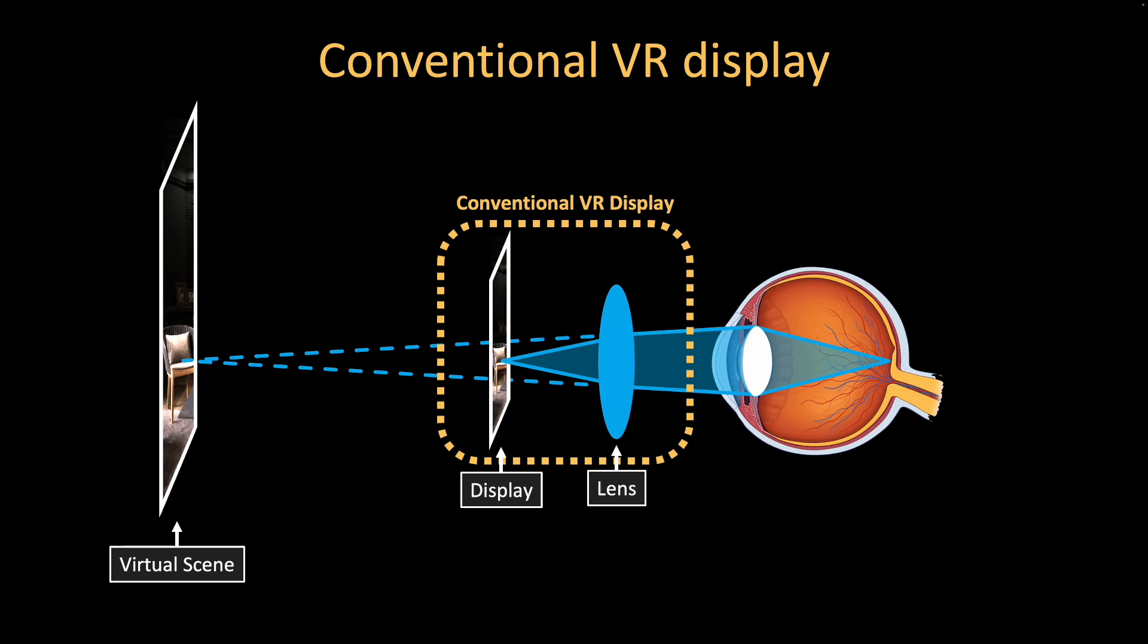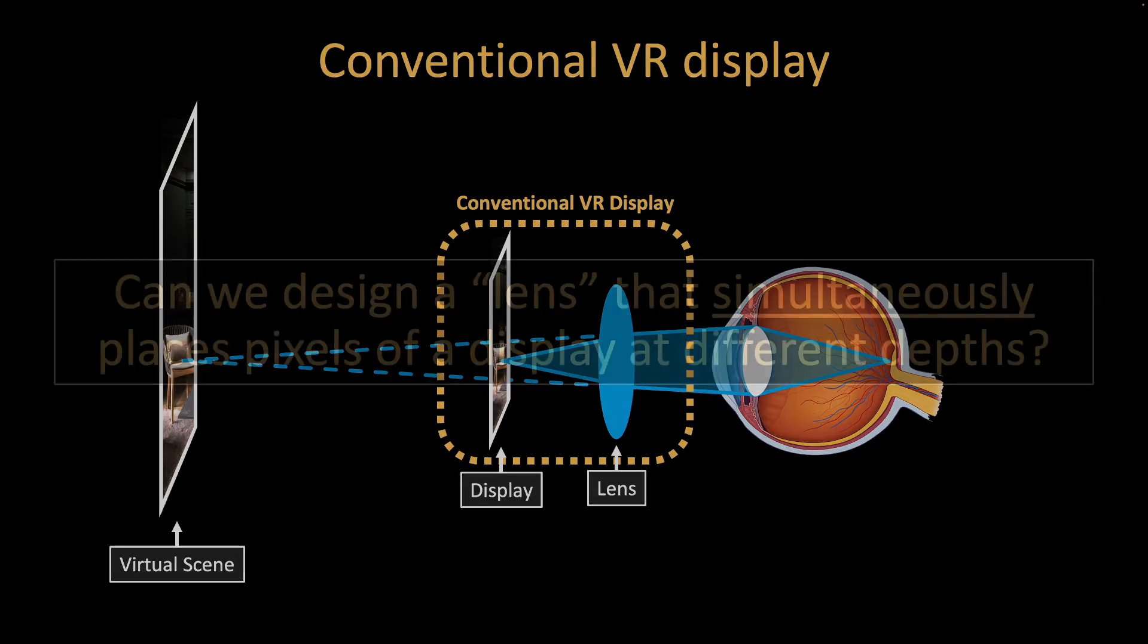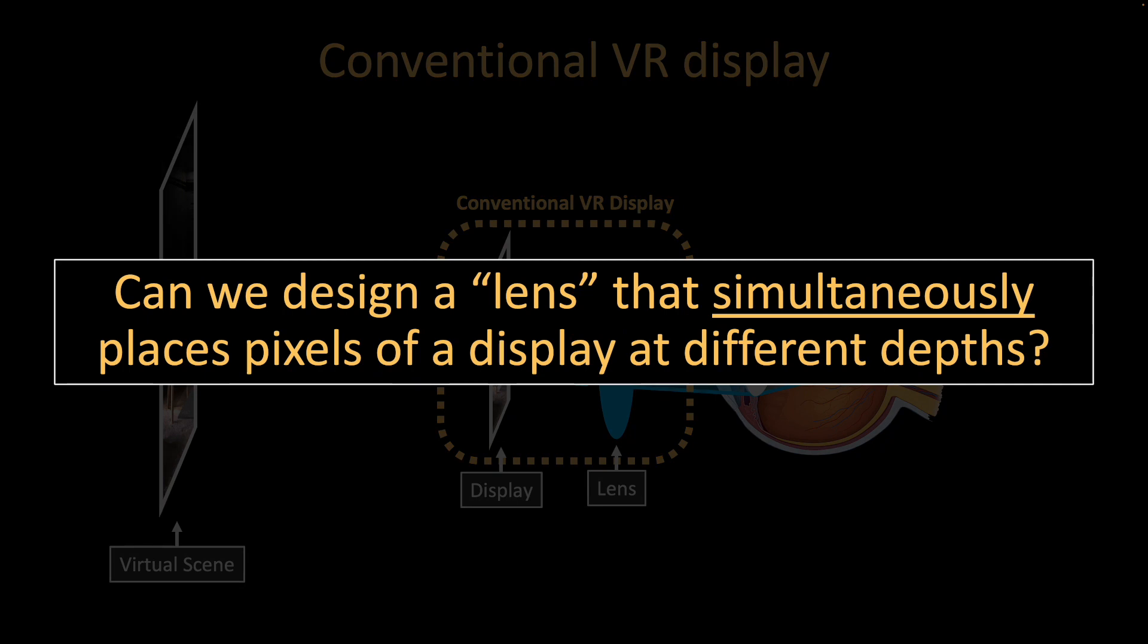However, the displayed images remain flat. But is it possible to create a lens that simultaneously positions pixels on a display to different distances from the eye?